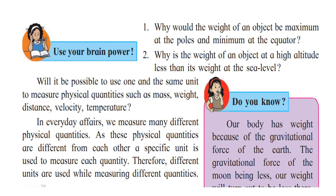Will it be possible to use one and the same unit to measure physical quantities such as mass, weight, distance, velocity, and temperature? No, it is not possible. As these physical quantities are different from each other, a specific unit is used to measure each quantity. Mass is measured in grams or kilograms. Distance is measured in meters or kilometers. Velocity is measured in meters per second or kilometers per hour. Temperature is measured in degrees Celsius or degrees Fahrenheit. Therefore, different units are used while measuring different quantities.